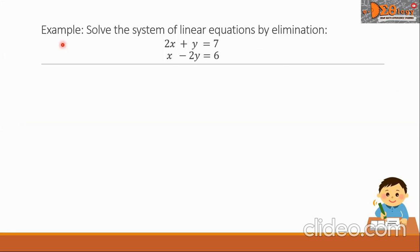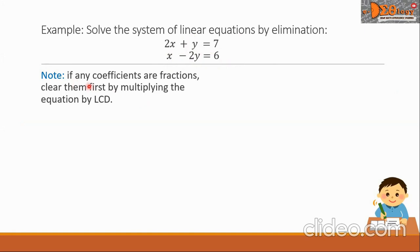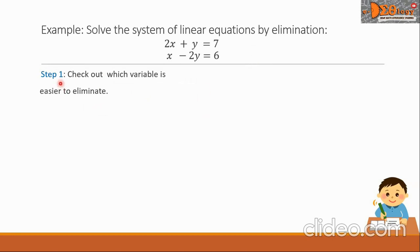Let us have an example. Solve the system of linear equations by elimination. We have two equations: the first is 2x plus y equals 7, and the second is x minus 2y equals 6. Note that if any coefficients are fractions, clear them first by multiplying the equation by the LCD, or least common denominator. But in our example there are no fractions, so let us proceed.